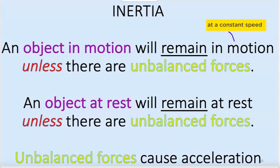So first and foremost, if we want to be able to describe what something's going to do motion-wise in terms of inertia, we need to know if the forces are balanced or unbalanced. And once we know that and we know what the object was initially doing, we can then make a statement to say the object stayed at rest or the object continued to move at a constant speed or the object started to accelerate, either speeding up or slowing down. Unbalanced forces cause acceleration.